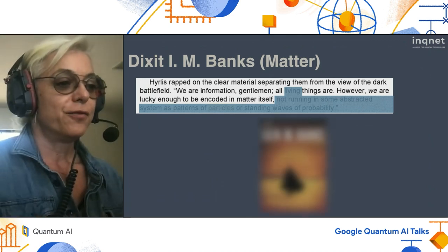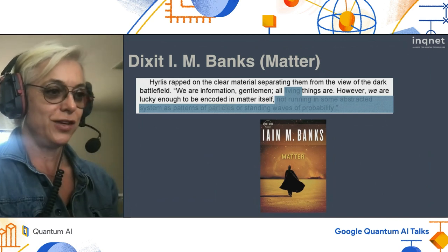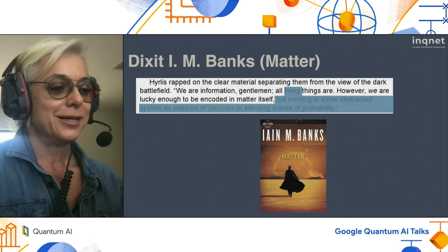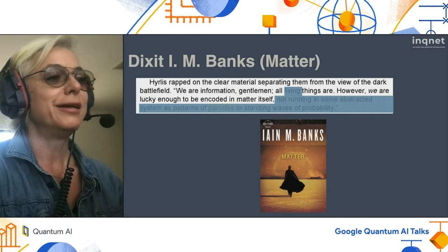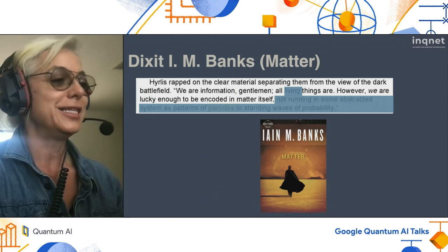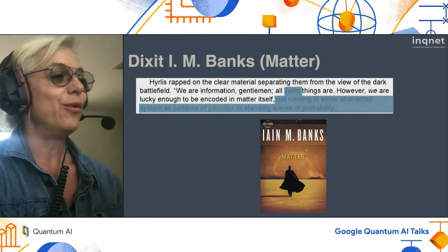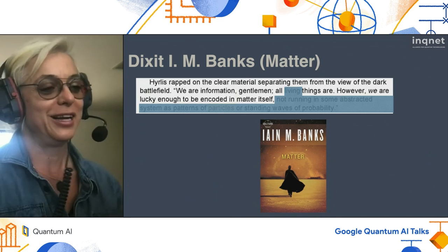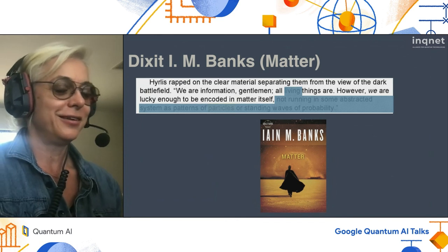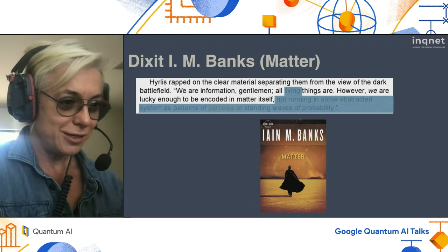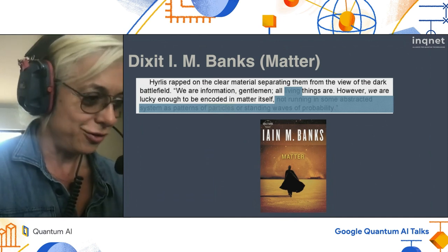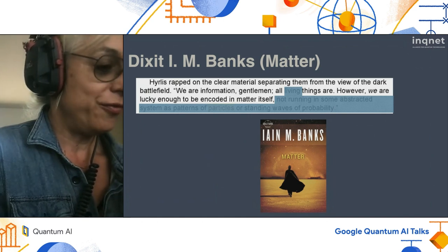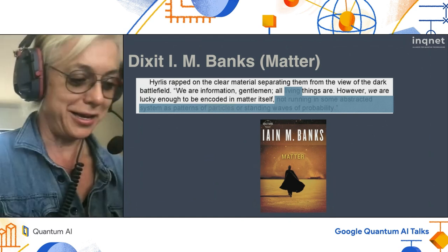I'll close with a quote from Iain M. Banks's Culture AI series: 'We are information, gentlemen. All things are. However, we are lucky enough to be encoded in matter itself.' I suggest for those who love quantum machine learning and the universe as we can imagine it thousands of years from now — we are having rapid developments. I think we will have more, and let's hope we move faster than we think into the beyond-NISQ era. Thank you.